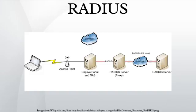Remote Authentication Dial-in User Service is a networking protocol that provides centralized authentication, authorization, and accounting management for users that connect and use network services. RADIUS was developed by Livingston Enterprises incorporated in 1991 as an access server authentication and accounting protocol, and later brought into the Internet Engineering Task Force standards. Because of the broad support and ubiquitous nature of the RADIUS protocol, it is often used by ISPs and enterprises to manage access to the Internet or internal networks, wireless networks, and integrated email services.